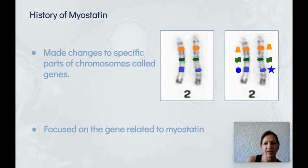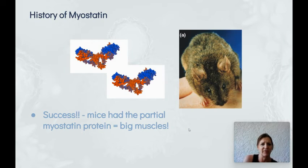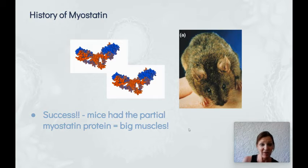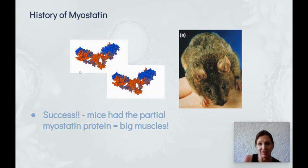Scientists honed in on the gene specifically related to the myostatin protein. They manipulated those genes and were able to breed mice that had the partial myostatin form — the one that's holey and doesn't fit into the receptors — and they got the big muscle mice.